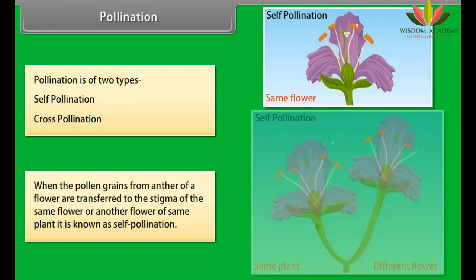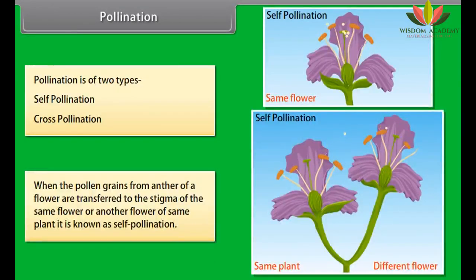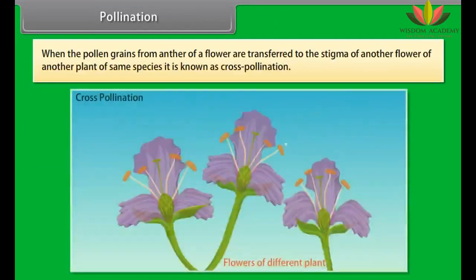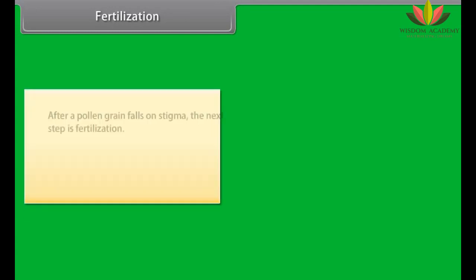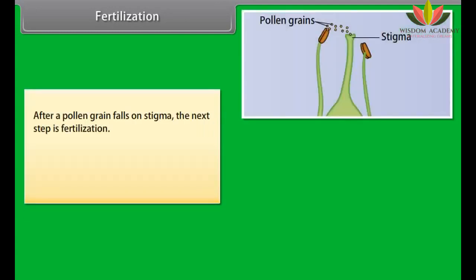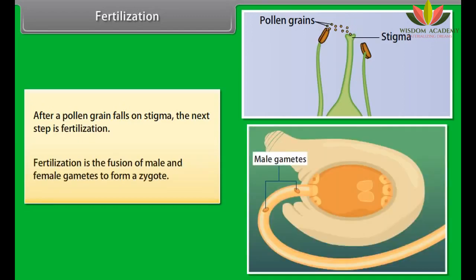The ovary matures to form fruit and contains seeds. In inflorescence, flowers do not always occur singly — flowers which are small in size often occur in clusters. An axis bearing a cluster of flowers is known as inflorescence; it may be terminal or axillary. Cauliflower is a very good example of inflorescence.